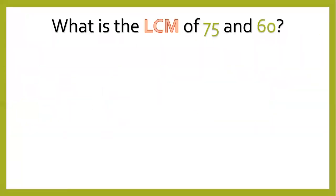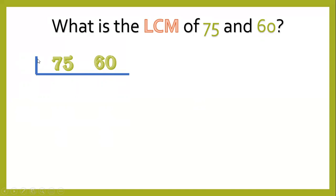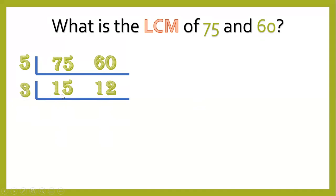Another example. What is the LCM of 75 and 60? Write in a horizontal line: 75, 60. Then divide by a prime factor. One of the prime factors is 5. So divide: 75 divided by 5 equals 15; 60 divided by 5 equals 12. 15 and 12 can still be divided by 3. So divide: 15 divided by 3 equals 5; 12 divided by 3 equals 4. 5 and 4 have no more common factor.